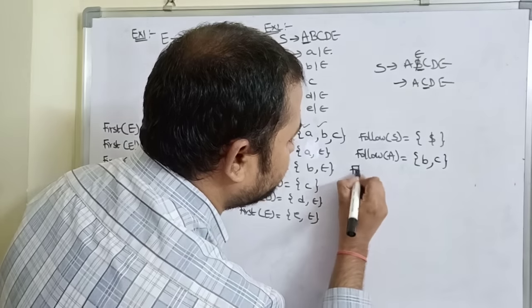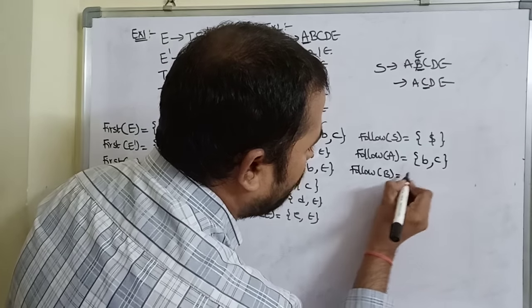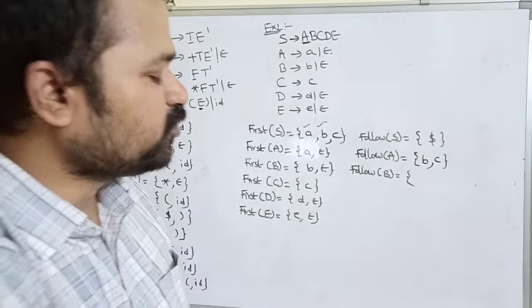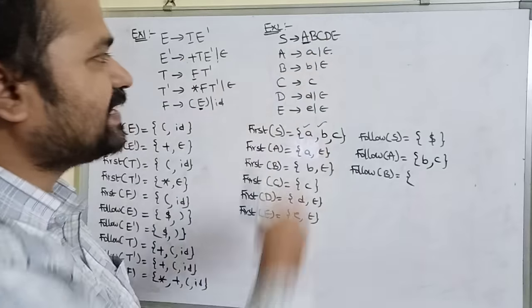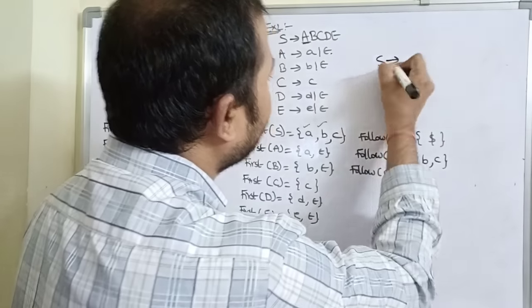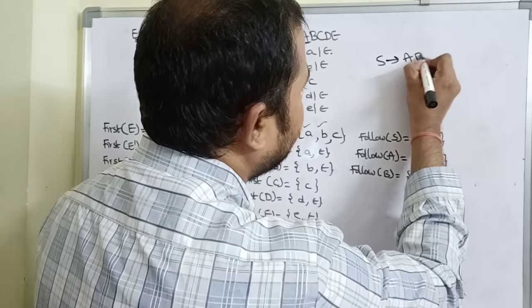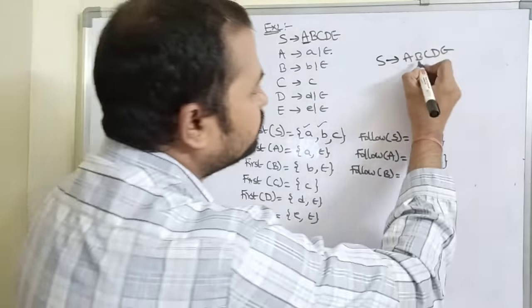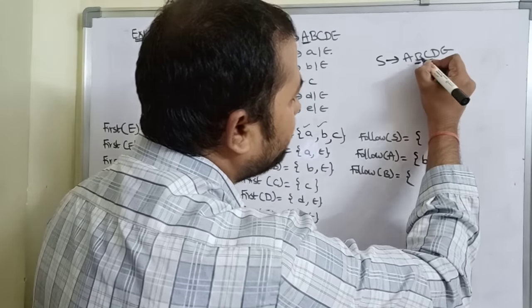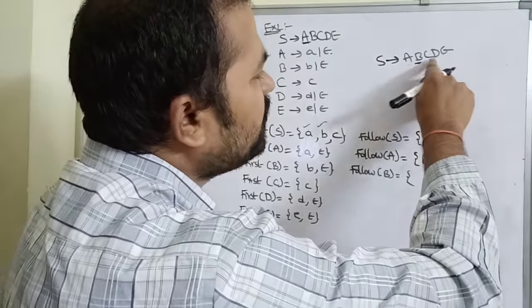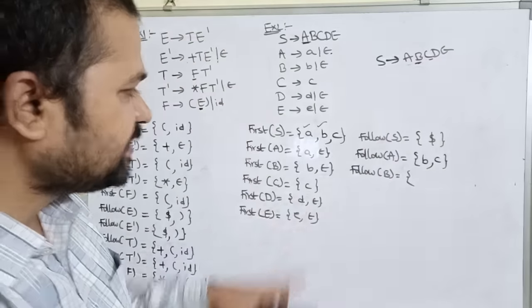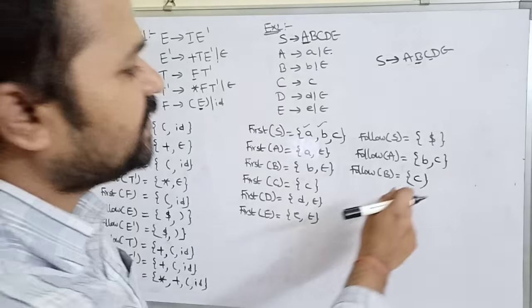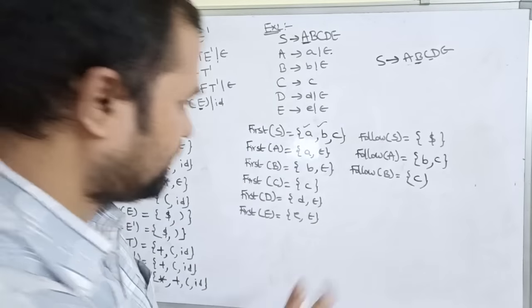FOLLOW of B: found in S implies A·B·C·D·E. Capital C follows B, and FIRST of C = {c} with no epsilon. So FOLLOW of B = {c}.